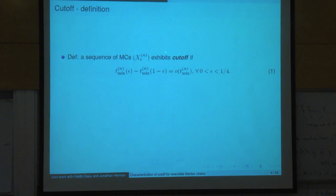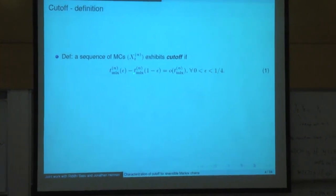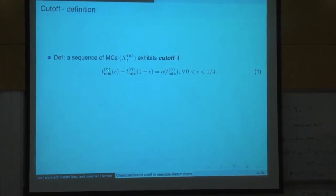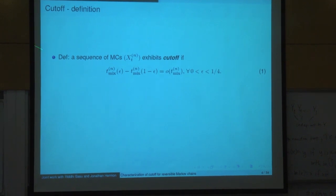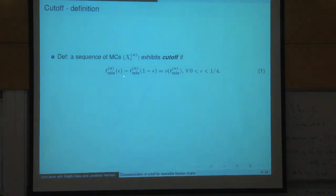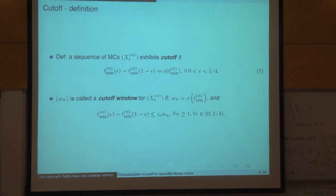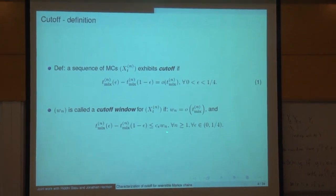This is a really fascinating phenomenon. The definition is that a sequence of chains exhibits cutoff if t_mix(ε) asymptotically doesn't depend on ε. In other words, t_mix(ε) minus t_mix(1−ε) is little-o of the mixing time. Another way to put it: if we have some sequence W_N and this inequality holds — where C_ε can depend on ε — then we say that W_N is a cutoff window for this chain.